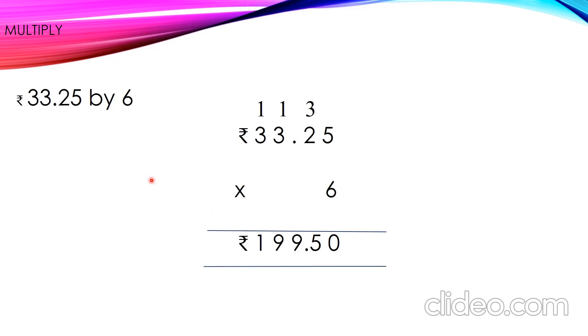Let's move on to the next example. Here, the question is 33 rupees, 25 paise by 6. Come on, let's write. 33 rupees, 25 paise into 6. 5 6s are 30. 0, 3 to be carried. 2 6s are 12. 12 plus 3, 15. 5, 1 to be carried. 3 6s are 18. 18 plus 1, 19. 9, 1 to be carried. 6 3s are 18. 18 plus 1, 19. So, here our answer is 199 rupees, 50 paise.